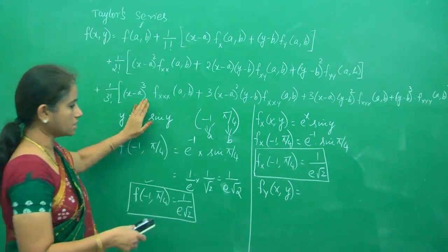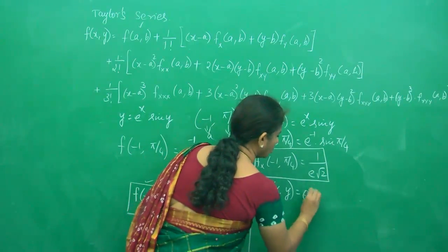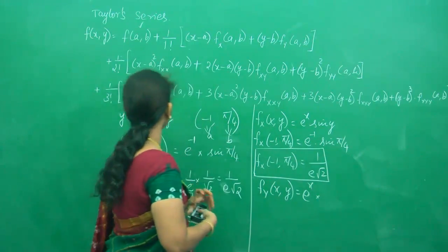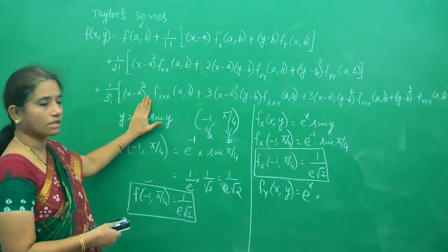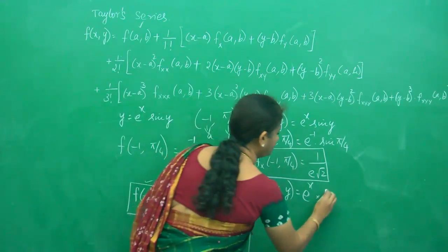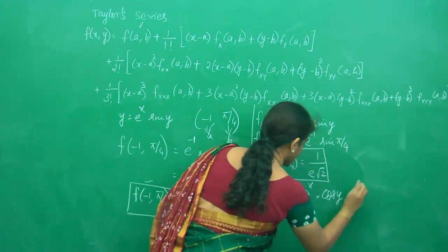When it is a constant, just carry it over. The derivative of sin y is cos y. So f_y(x,y) = e^x cos y.